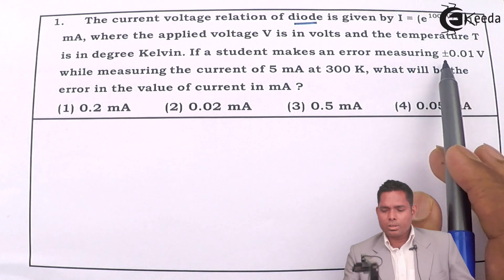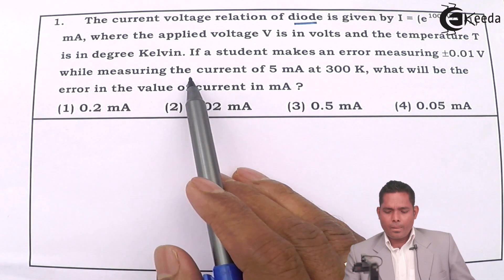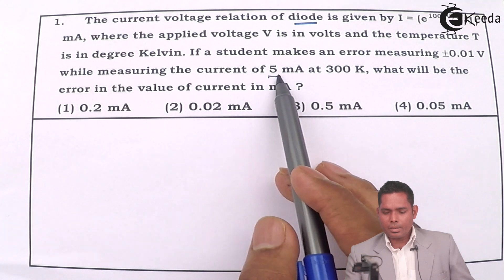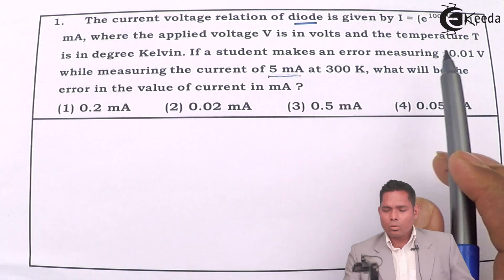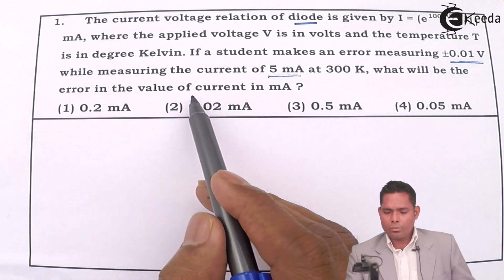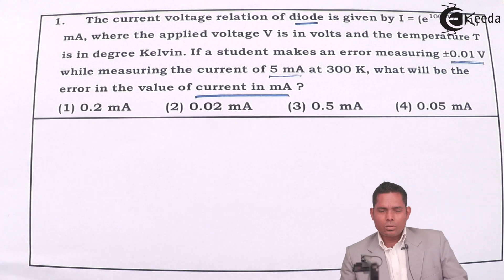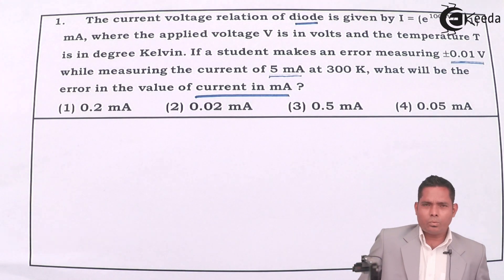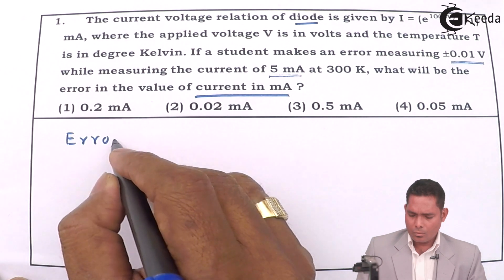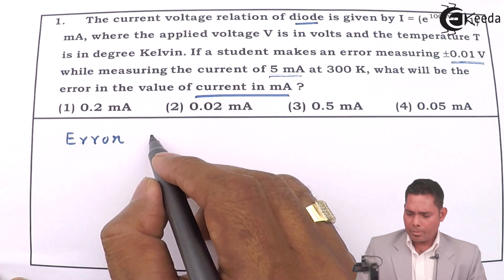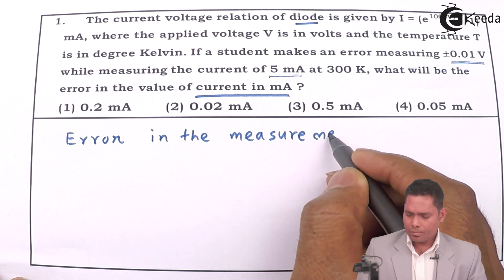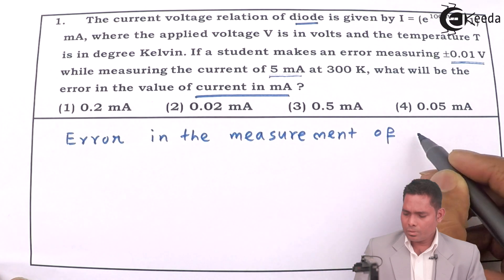While measuring the current of 5 milliampere at 300 Kelvin. So the current measured is 5 milliampere, the voltage error is given. What will be the error in the value of current? So basically we have to find the error in the measurement of current.